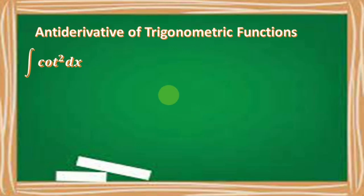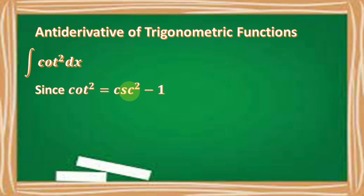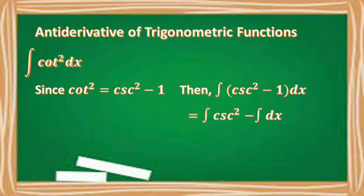What if we have the integral of cotangent squared x dx? Since cotangent squared x is equal to cosecant squared x minus 1, we evaluate the integral of the quantity cosecant squared x minus 1 dx, which is equal to negative cotangent x minus x plus C.